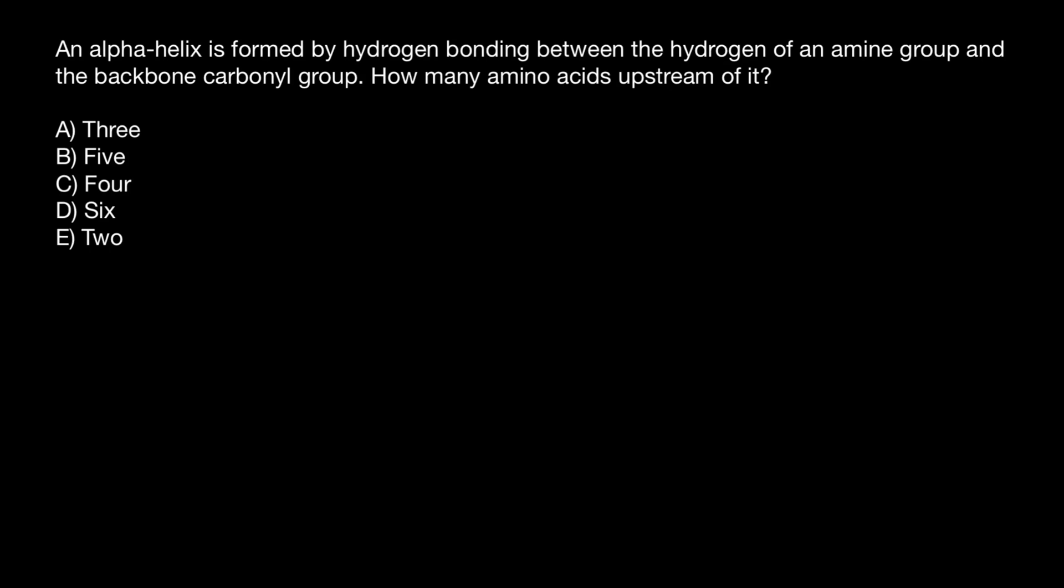Hello and welcome to Nikolai's genetics lessons. And today's question is, an alpha helix is formed by hydrogen bonding between the hydrogen of an amine group and backbone carbonyl group. How many amino acids upstream of it?